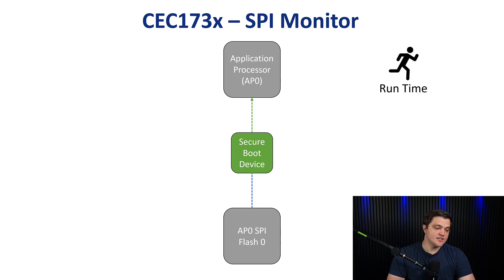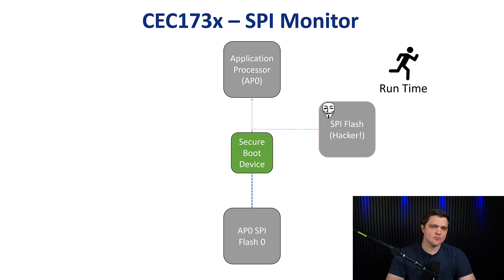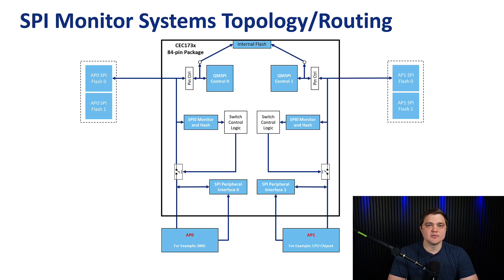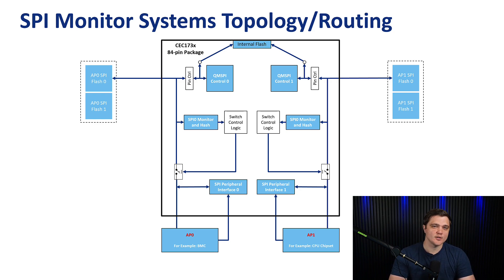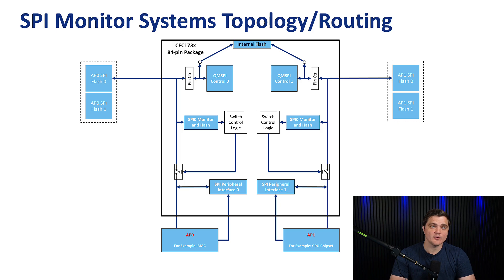What if a malicious party were to inject malicious code onto the SPY bus at that point — after secure boot has completed? How is it that we can prevent somebody from doing this? Here we'll use a system topology block diagram of the CEC173X to explain how the SPY Monitor reinforces our platform resiliency in real time, or during time of use. Once we've covered how each of these blocks contributes, we should have a bigger picture understanding of how we're addressing that threat vector.